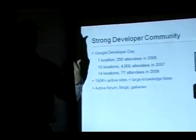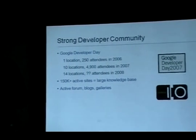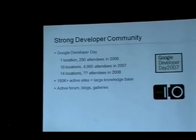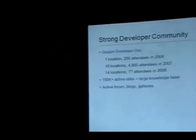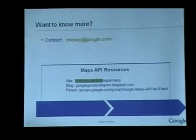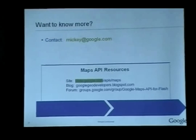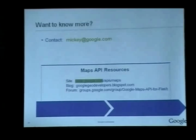The Google Maps API has a very strong developer community — 150,000 plus websites are using it. We've held developer day events here in Sydney and around the world. We have a very active community with a lot of small developers, a lot of big developers, an enterprise product, and a number of other things. We're based right here in Sydney — Google Maps was invented here and our team is here as well. Just type in Google Maps API to find out more. Thank you.